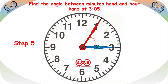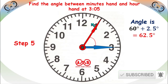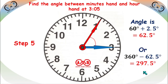Step 5: here, the hour hand goes farther from the minute hand, so the angle will be increased. The angle is the original angle of 60 degrees plus the hour hand movement of 2.5 degrees. So the original angle is 60 plus 2.5, which is 62.5 degrees. There is another angle on the outer side: 360 minus 62.5, which is 297.5 degrees.